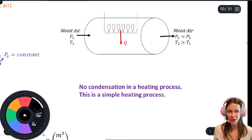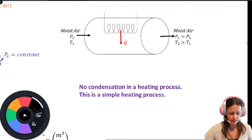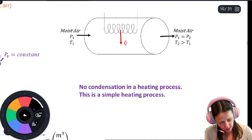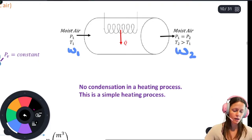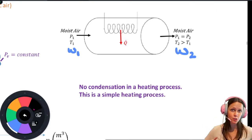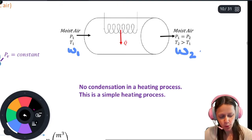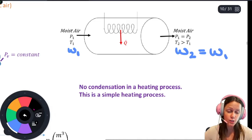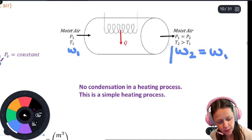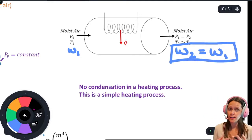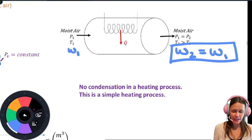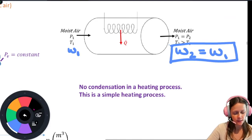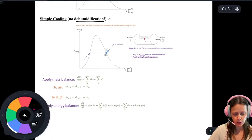For simple heating, you don't need to worry about condensation. If the problem doesn't specifically tell you that air is being humidified, there's nothing to worry about. The most important thing to remember is that the ratio of the mass of water vapor to the mass of dry air — the specific humidity — is not going to change. If you're told air is simply being heated, that's a simple heating process and omega_1 = omega_2.